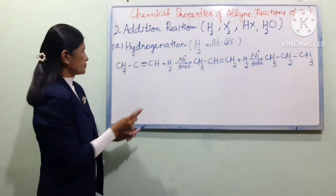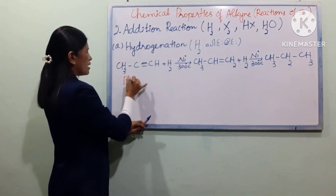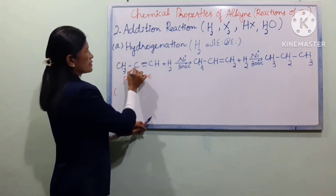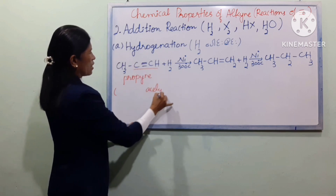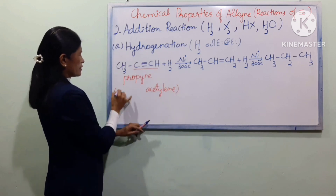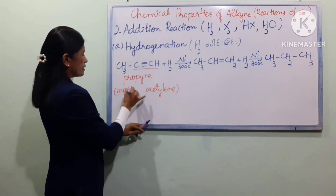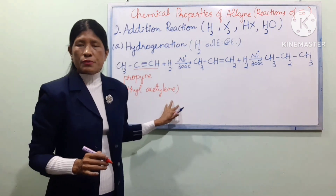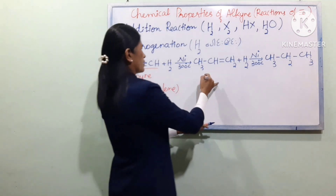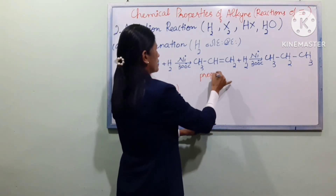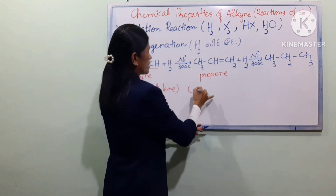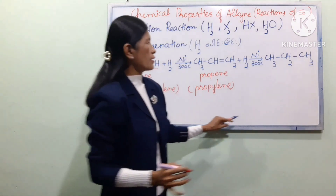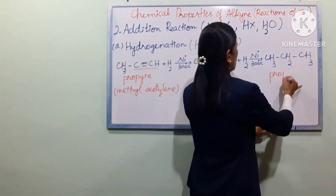We can also use bromine (Br2) in addition reactions with acetylene. Acetylene reacts with bromine in a halogenation addition reaction, adding bromine across the triple bond of the alkyne.